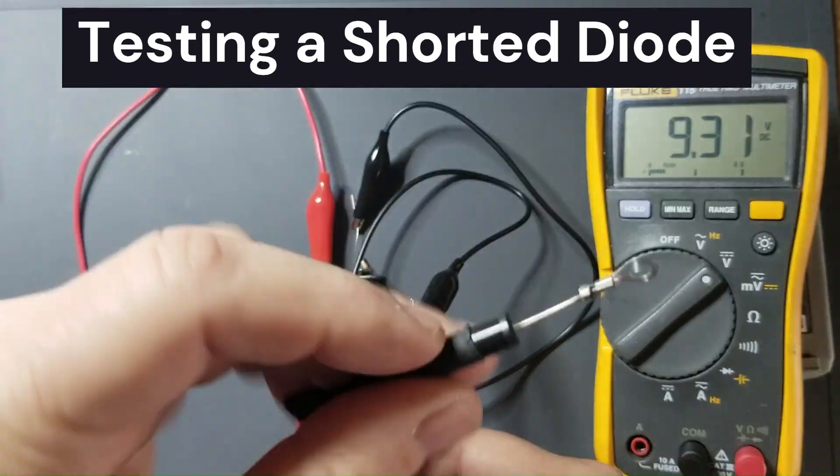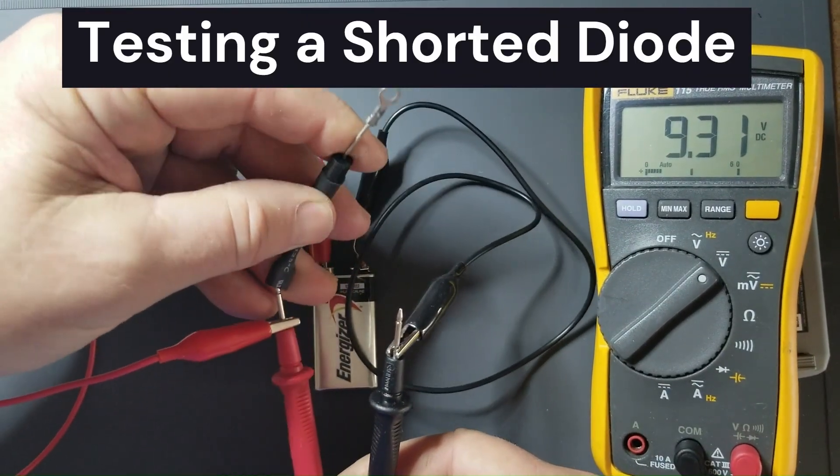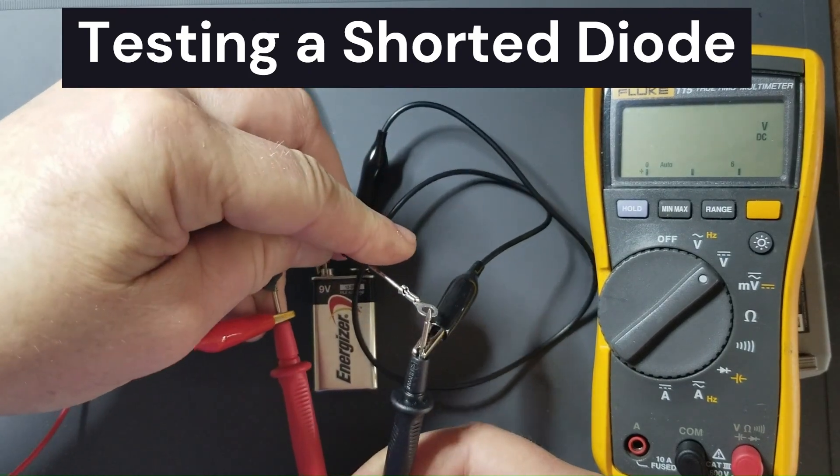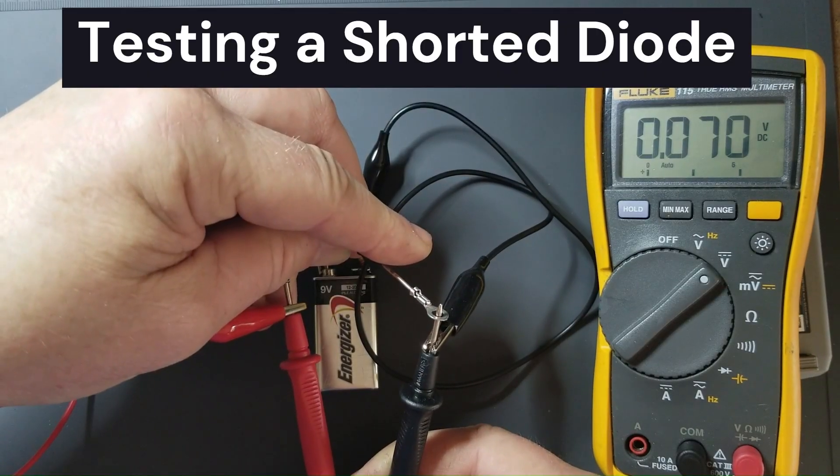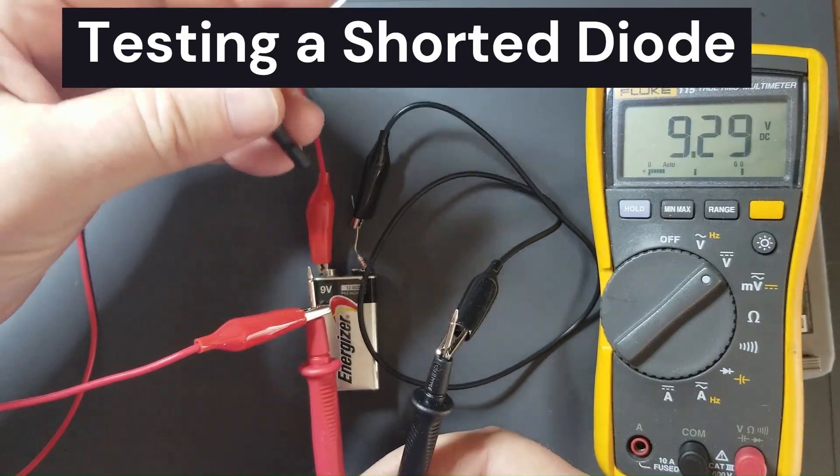Now this is a shorted microwave diode right here. Notice that a shorted diode drops the voltage down to 0.07 volts or seventy one thousandths of a volt. So that's basically a dead short.